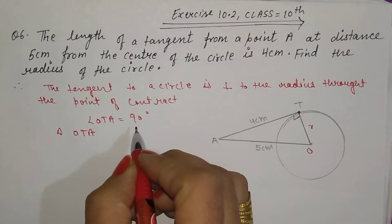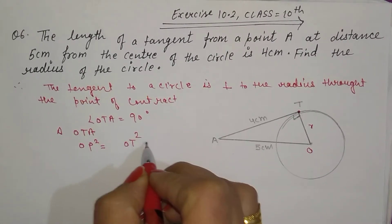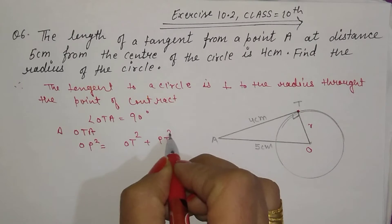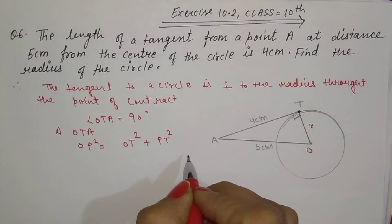So OA square equals OT square plus AT square by Pythagoras theorem.